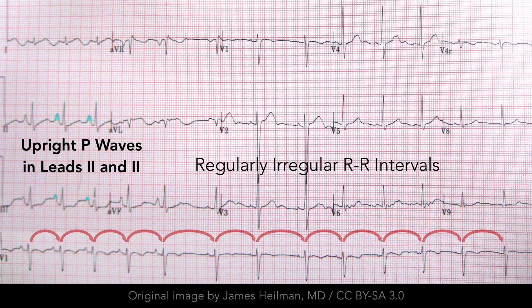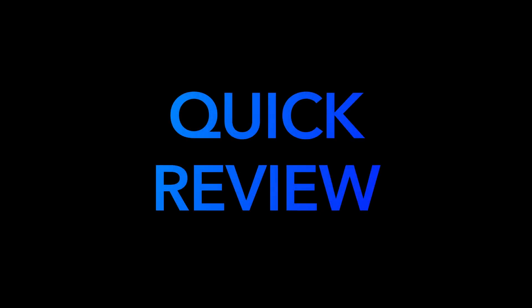To summarize, with respiratory sinus arrhythmia, there is a sinus pacemaker as evidenced by upright P waves in leads 2 and 3 with a constant morphology, and there is rhythmic variation in the cardiac cycle length. Now let's briefly review these rhythms.